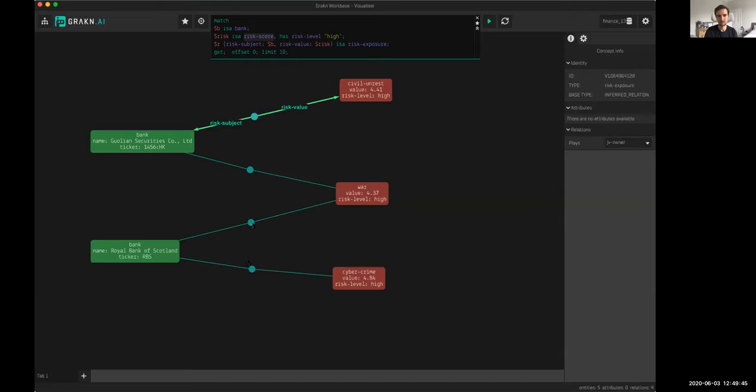Second, why were these created? What's behind these four relations? Because the actual underlying data doesn't have any relation between any bank and any risk score. These four are what we call inferred relations—they're not persistent. They were computed on the fly just when we asked the question. Their base type is inferred relation, hence it being inferred and not persistent.